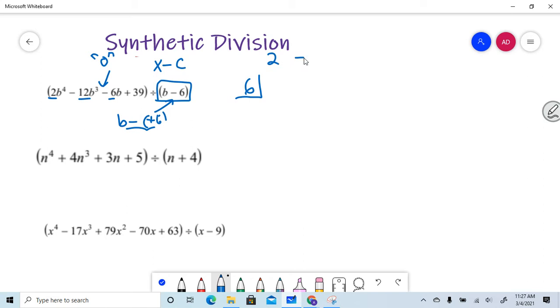So two, then a negative 12, look what I'm doing, I'm putting down the coefficients. But like I said, I'm missing a squared term, so I have to put a zero there. And I have a negative six, and then I have a 39. So I place the coefficients across the top line. Got it? Good.